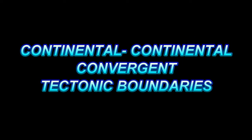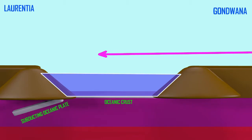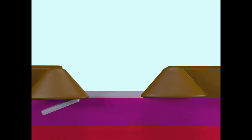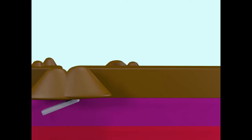When an oceanic plate collides with a continental plate and the oceanic plate is subducted under the continental plate, the oceanic plate gets smaller and smaller. At some point, the continental plate will then strike another landmass — another continental plate. When this happens, neither can subduct underneath the other because both are lighter than the denser rock beneath them, and so they collide and deform the continental crust.